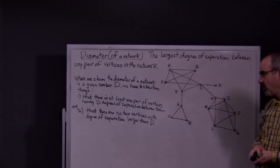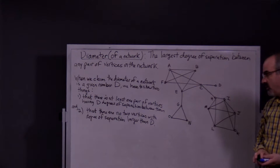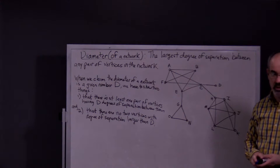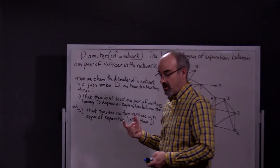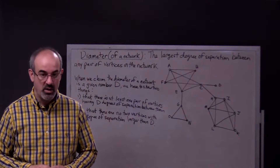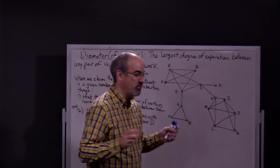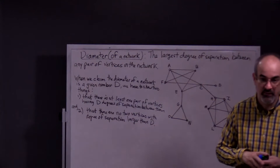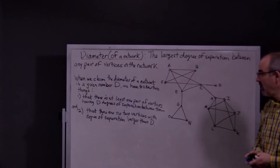And two, that there are no two vertices with a degree of separation larger than D. So if you say the diameter of a network is four, you have to make sure that there aren't two vertices that have a degree of separation larger than four, like five.